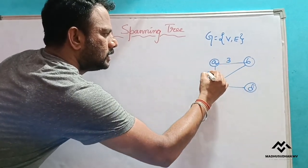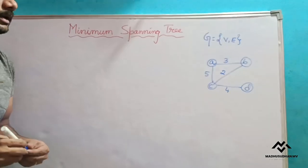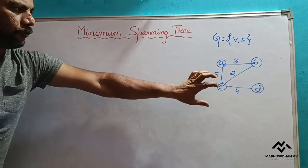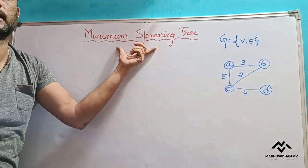So let us take this is 3, this is 5, this is 2, this is 4. So this is one simple graph. Now for this graph we need to construct minimum spanning tree.